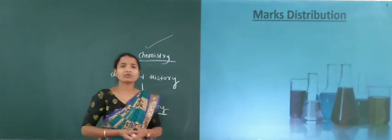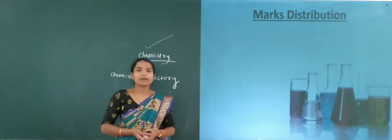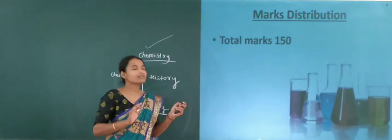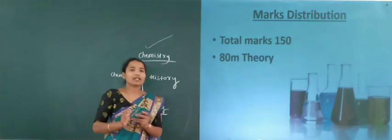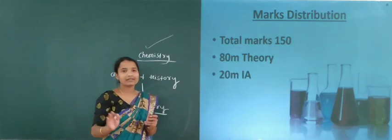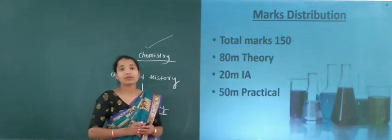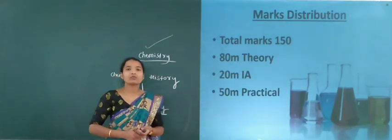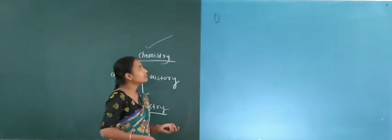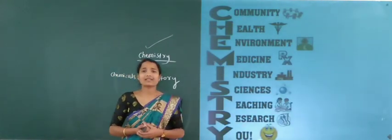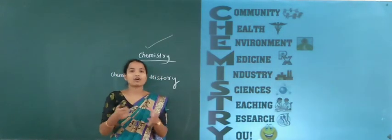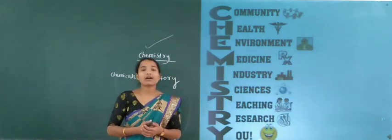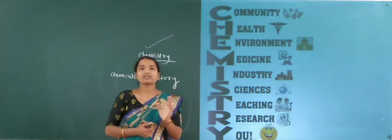Here, according to your section — that is the BSA section — your paper is containing totally 150 marks. That is the marks distribution. Out of 150, 80 marks are for theory, 20 marks for IA — that is internal assessment — and 50 marks for your practical examination. Totally there are 150 marks for each paper.